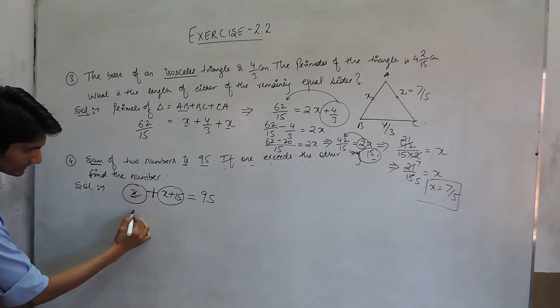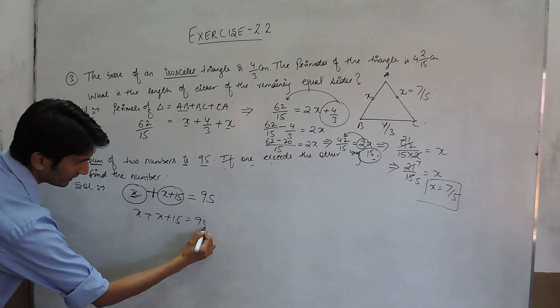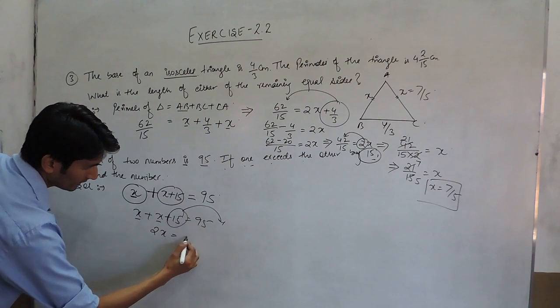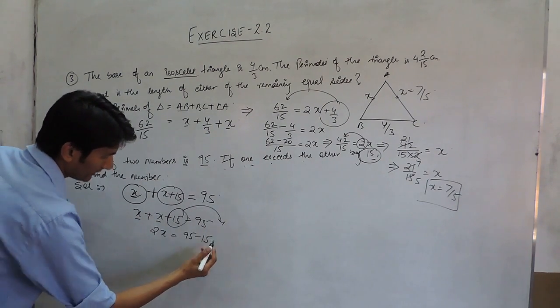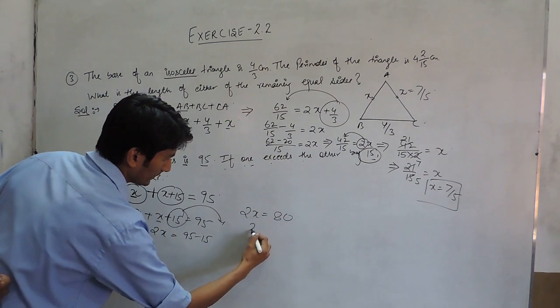Solving this, it is actually this plus this equals 95 and this plus this is 2X. And when this is shifted to that side, it will become 95 minus 15 and it will be 2X equals to 80.